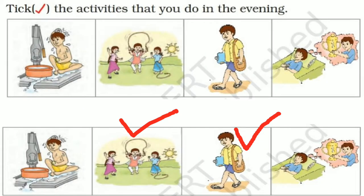Next, tick the activities that you do in the evening. We have to tick the activities we do in the evening. First, bath — I don't take a bath in the evening, so I did not tick that. Next, the children are playing. Do you play in the evening? Yes — in the morning we go to school and come back home in the evening to play with friends, so I have ticked the second picture. In the third picture, a boy is carrying his school bag. If you think he is going to school, we go in the morning so we must not tick. But if you think he is coming back from school, we come home in the evening, so then you tick. I have ticked it.